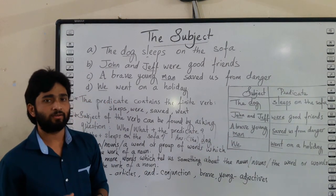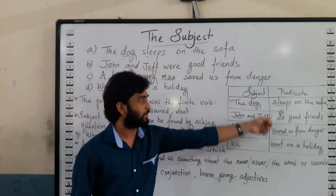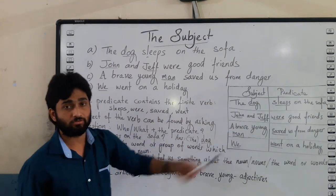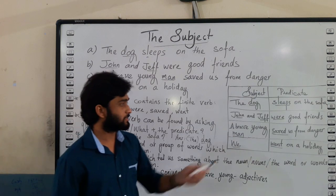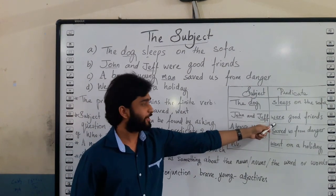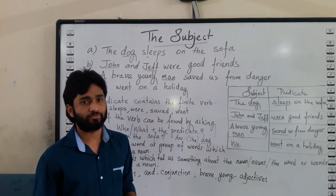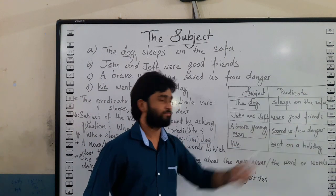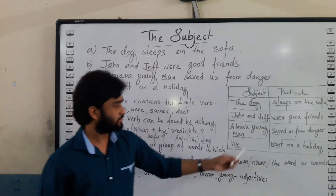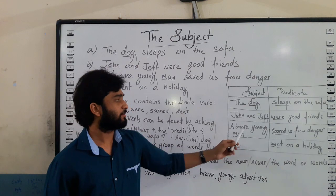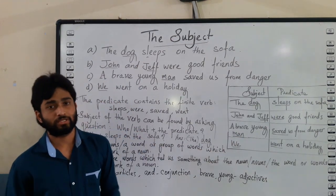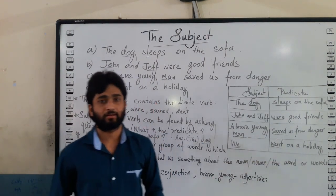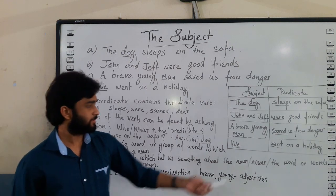Using the same method: 'Who were good friends?' — the answer is 'John and Jeff.' 'Who saved us from danger?' — the answer is 'a brave young man.' 'Who went on a holiday?' — the answer is 'we.' So by asking 'who or what' plus the predicate, we get the subject.